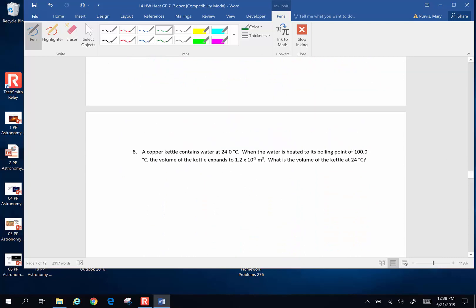Number eight. A copper kettle contains water at 24 degrees Celsius. When the water is heated to boiling at 100 degrees Celsius, the volume of the kettle expands to 1.2 times 10 to the negative fifth cubic meters. What is the volume of the kettle at 24 degrees Celsius? We want to know what is the original volume. The change in temperature is going to be 100 minus 24, and that is 76 degrees Celsius.